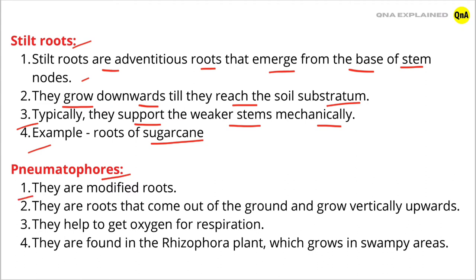Pneumatophores are modified roots. They are roots that come out of the ground and grow vertically upwards. They help to get oxygen for respiration. They are found in the Rhizophora plant, which grows in swampy areas.